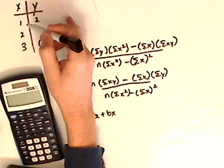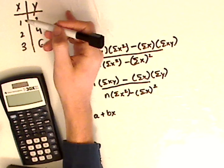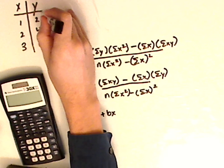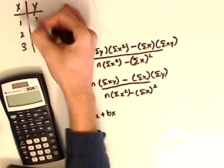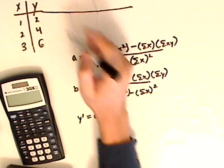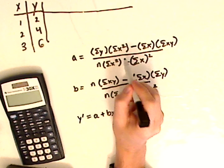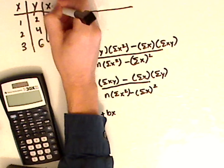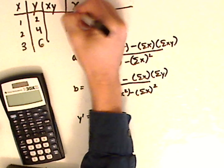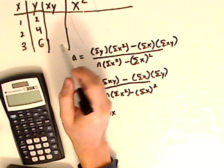Remember, when you're doing a linear regression, you have two variables. One is your input and one is your output — your independent and your dependent variable. So we need y's, we need x, we need xy's, and we need x squares. And we need to take the summation of all those.